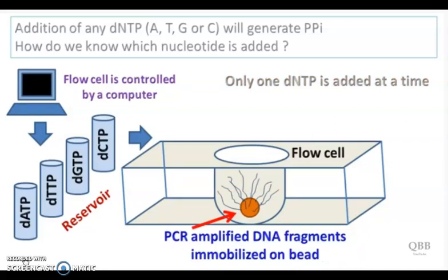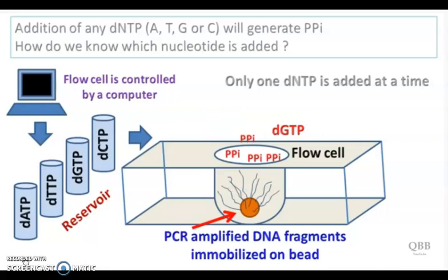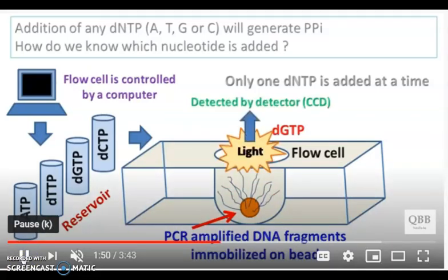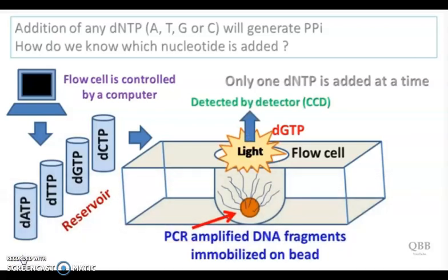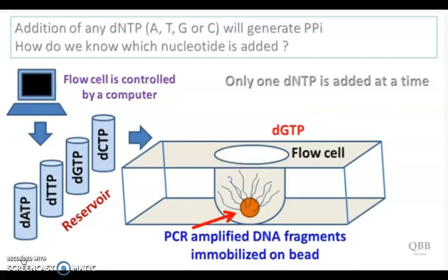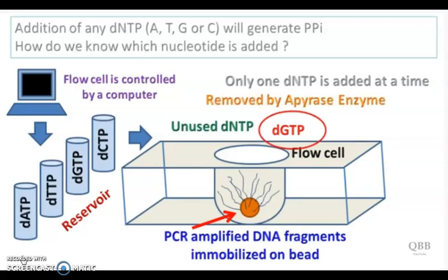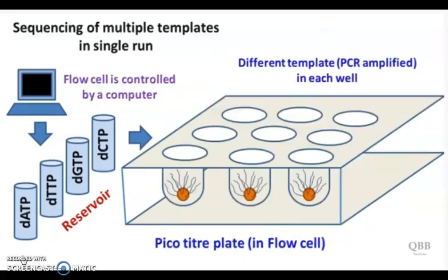Because of this, when a dNTP is added, a large number of pyrophosphate molecules are released. Hence, the light produced is intense and easily detected by the sensor. If dNTP is not incorporated, no light is detected. Hence, the sequence information of the DNA can be easily obtained with light. Unused dNTPs in the flow cell can be removed by the apyrase enzyme.